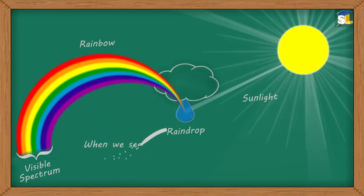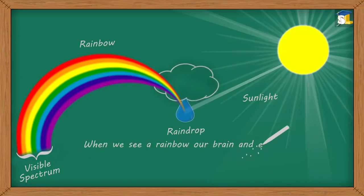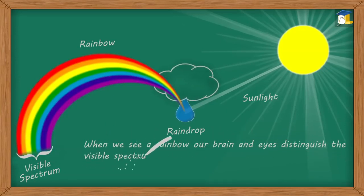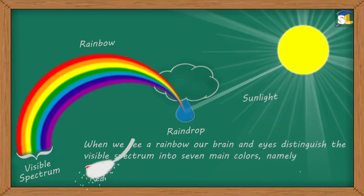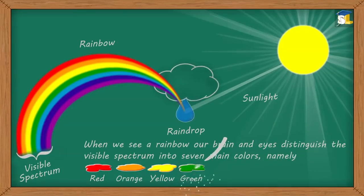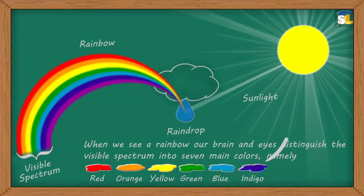When we see a rainbow, our brain and eyes distinguish the visible spectrum into seven main colors, namely red, orange, yellow, green, blue, indigo, and violet.